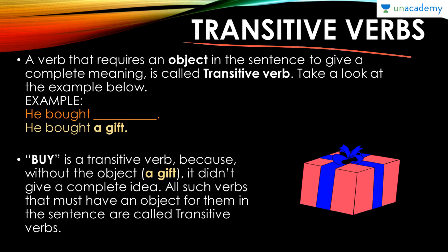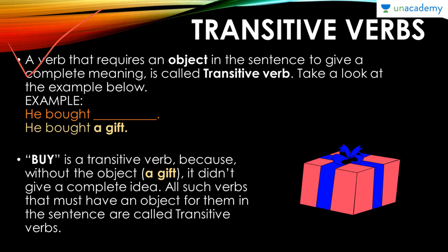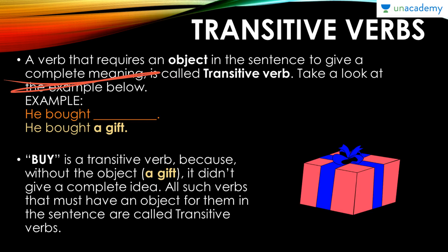Transitive verbs — definition first. A verb that requires an object in the sentence to give a complete meaning is known as a transitive verb.